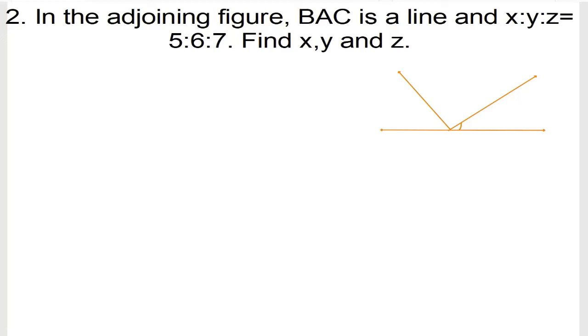Now we are doing exercise 6.1, question number 2. In the adjoining figure, BAC is a line, and X is to Y is to Z is equal to 5 is to 6 is to 7. Find X, Y, and Z.